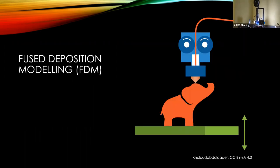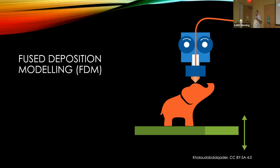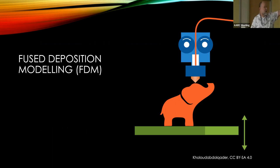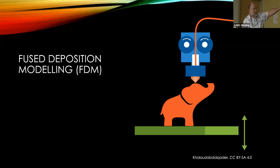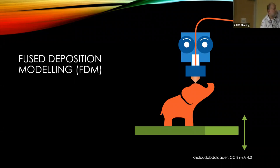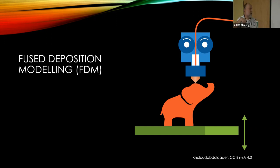FDM, or fused deposition modeling — the idea is similar, you're depositing material layer by layer to create a solid. In most modern FDM printers the bed stays fixed and the extruder is on a gantry. You've got filament that comes on a spool, fed using stepper motors into a hot extruder.